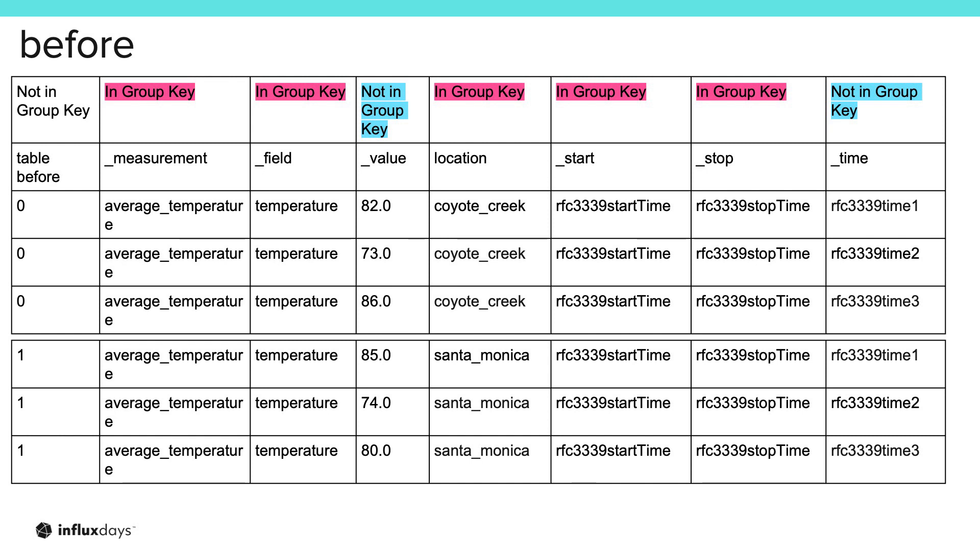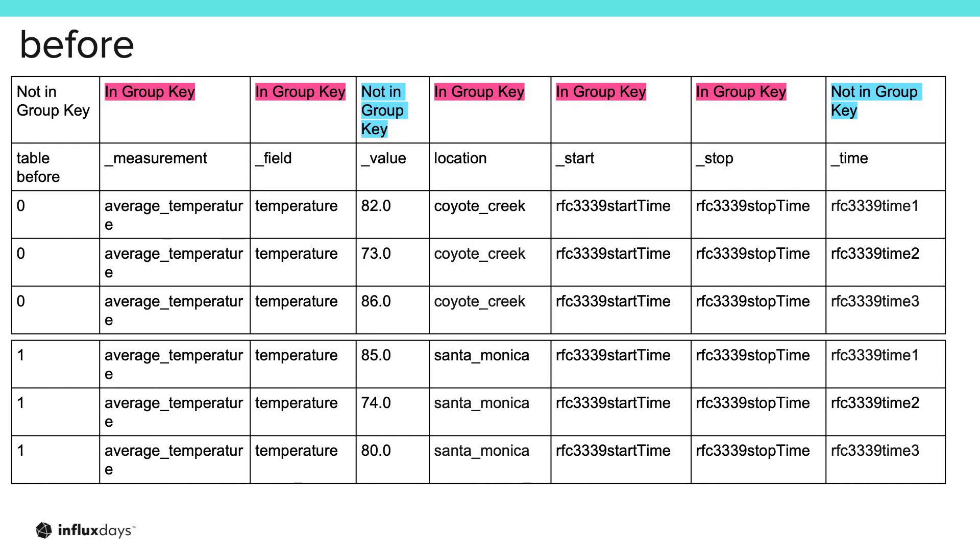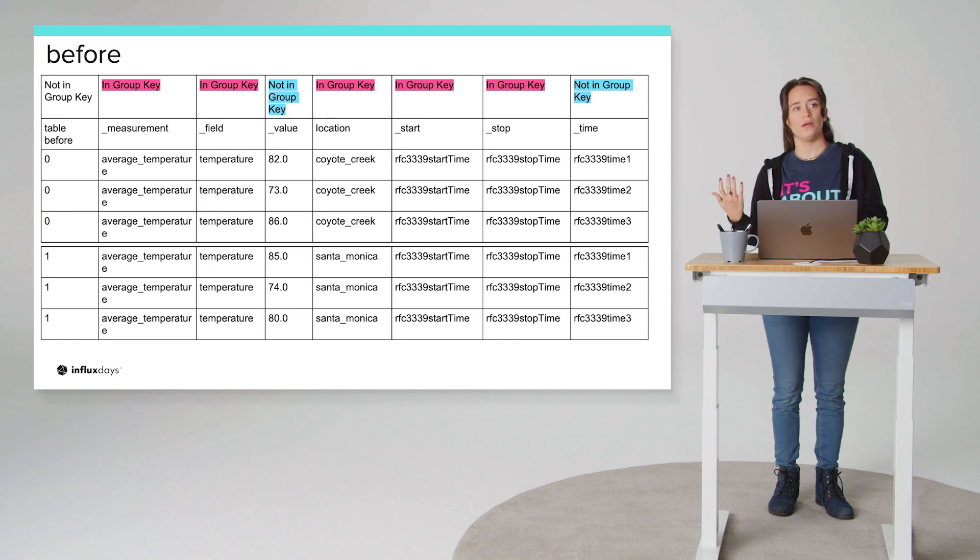So let's take a second to look at the first yield, the yield before I'm actually grouping, and I've named that result before. And then also let's take a look at the result after I've grouped our data, and that's called group on measurement. So here's what our data looks like before. There are two tables in this result stream that we've labeled before with the yield function. And previously, by default, because the series are defined by the tags, the field keys, and the measurement, you can see that the measurement, field, location, and start and stop, which are added. There are also additional parts of your flux query which are added from the range function. Those are all part of the group key because they're the same value in every record for those columns. Whereas underscore value and underscore time columns, those are not part of the group key just like we saw before.